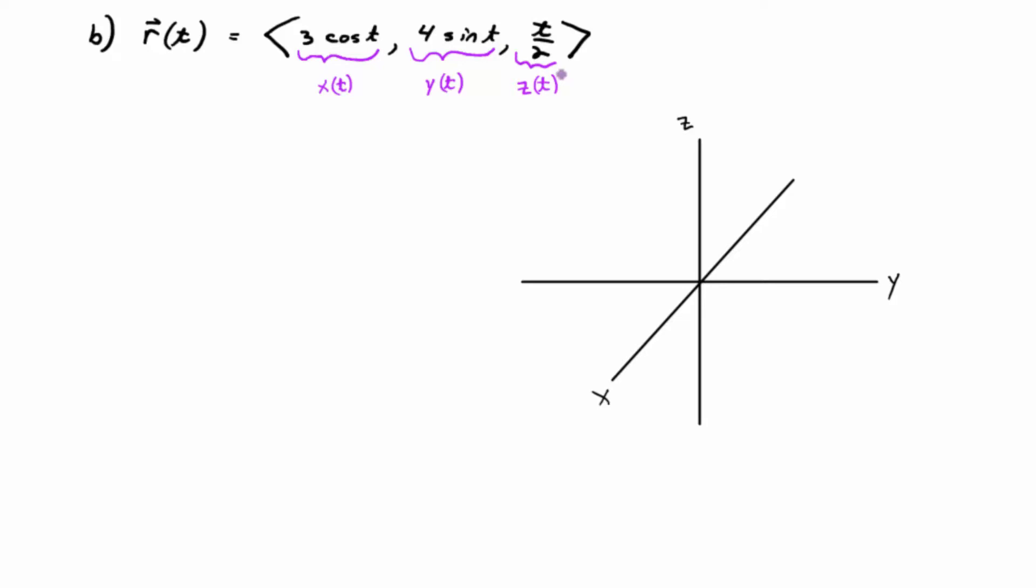So we need to graph the set of points represented by that vector-valued function. We're just graphing the tips of the arrows here. So let's make a table. The table is going to include one column for t values that you plug in, one column for x of t values or just x values, one for y of t values, and one for z of t values. I want to plot some values that are easy to work with when you take the trig functions cosine and sine. So I'm thinking zero for t would be pretty easy. And then how about pi halves? And then pi, so I guess I'm going by pi halves. The next one would be 3 pi over 2, and then maybe all the way around to 2 pi. And then we'll see what we get.